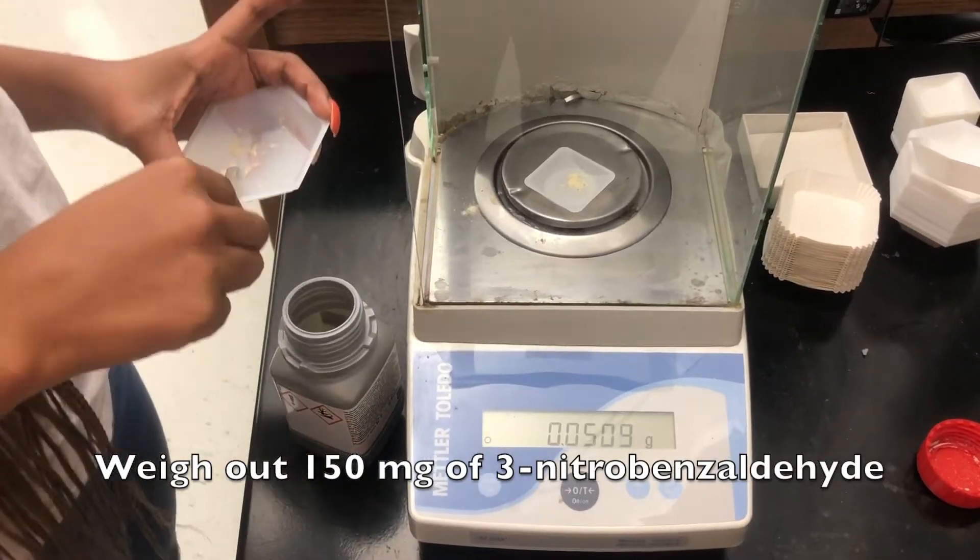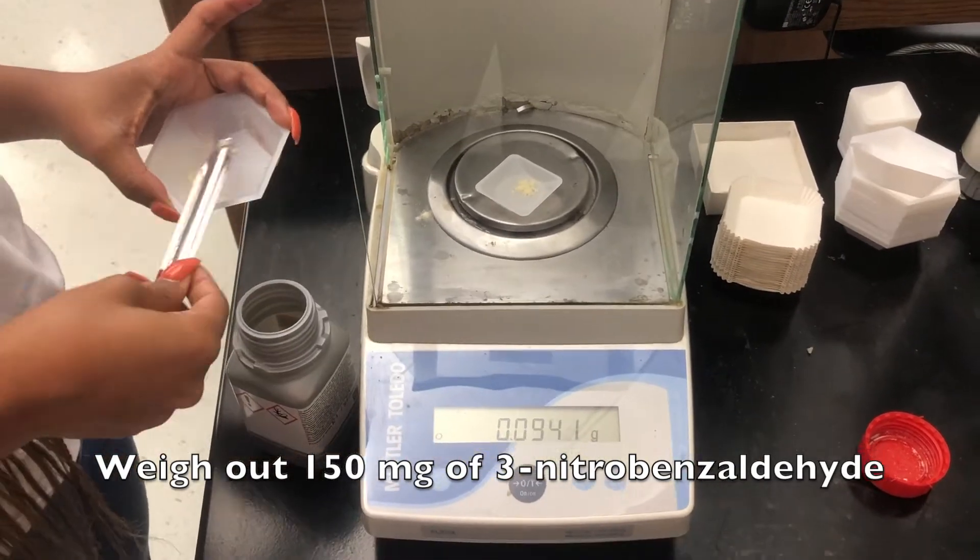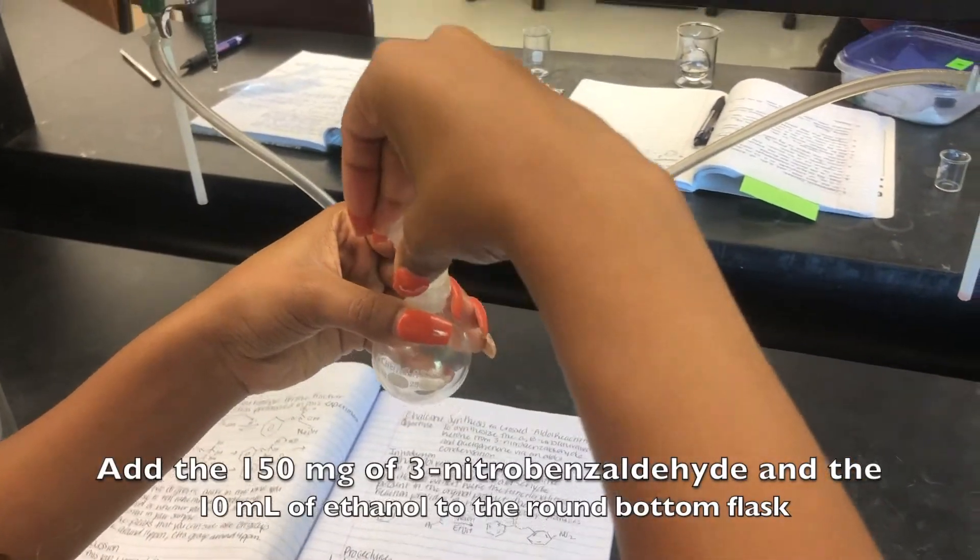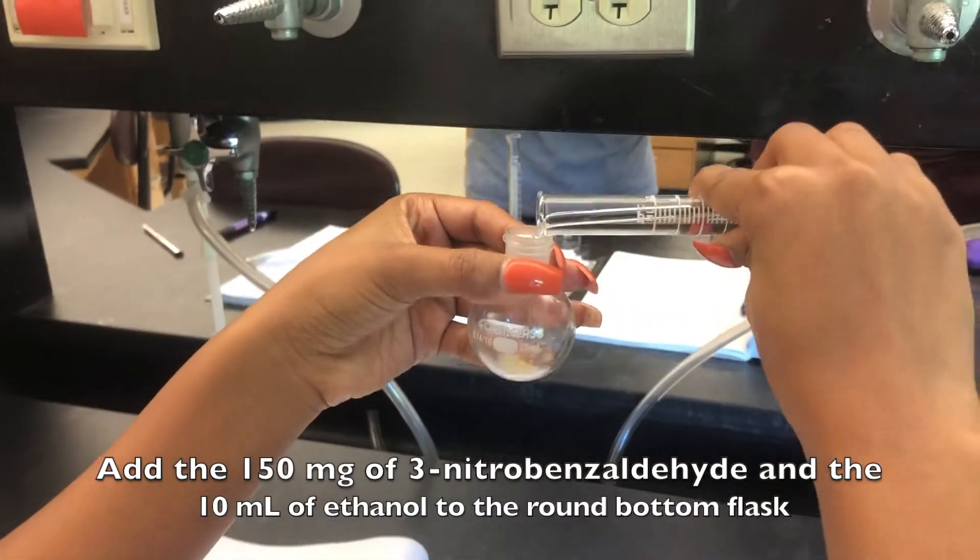Weigh out 150 milligrams of 3-nitrobenzaldehyde. Add that in the ethanol to the round bottom flask.